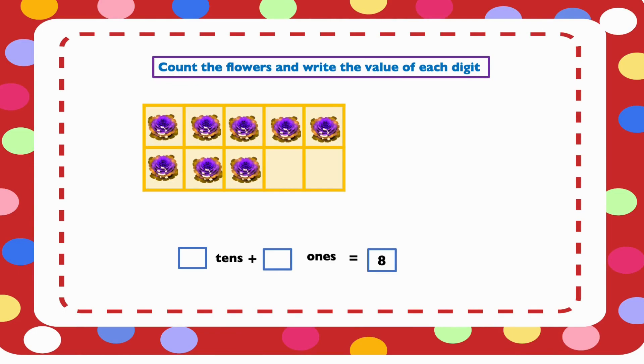Count the flowers and write down the value of each digit. We have 8 flowers. We want to know the value of 8 in tens and ones. Is it tens or is it ones? Let's count the flowers: 1, 2, 3, 4, 5, 6, 7, 8.